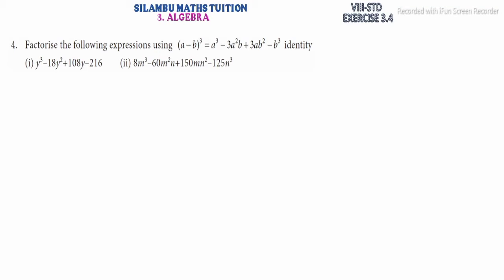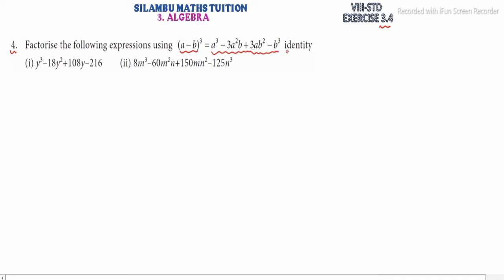Hi student, this is Silambu Max Tuition, 8th standard exercise 3.4, question number 4. Factorize the following expression using the identity: a minus b whole cube equals a cube minus 3a squared b plus 3ab squared minus b cube.